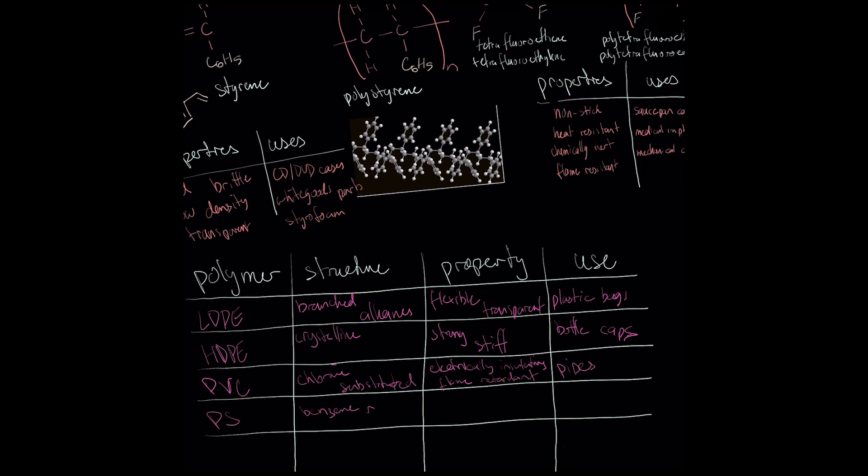Polystyrene has large benzene rings all along its structure. This gives it strong dispersion forces but low density and high brittleness. It can also be made transparent. This makes it suitable for applications that are low impact but where transparency is important, such as CD cases.